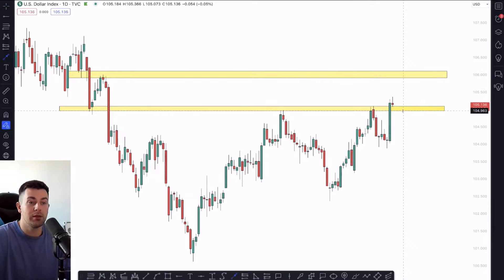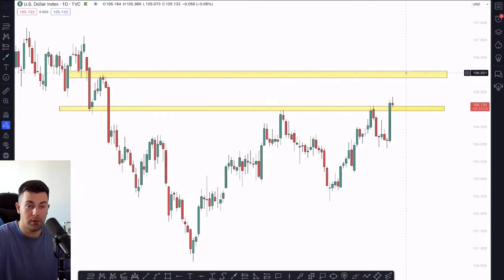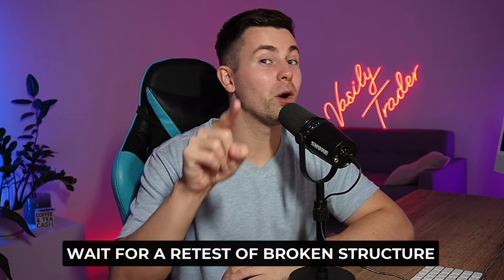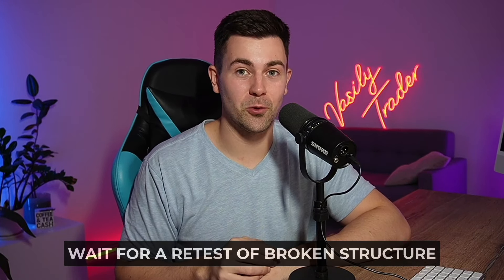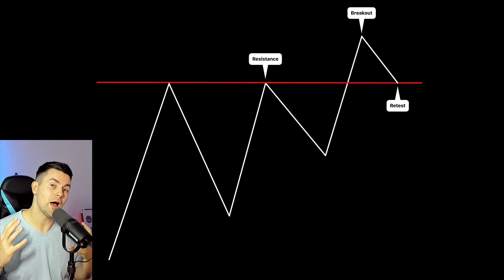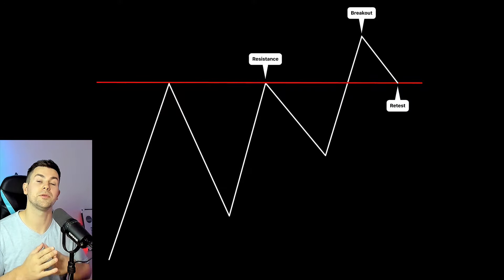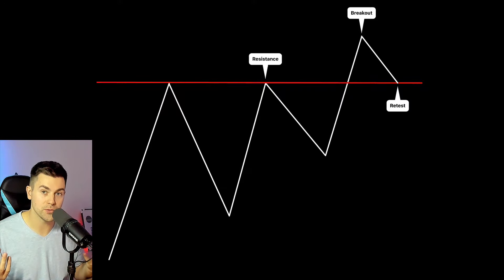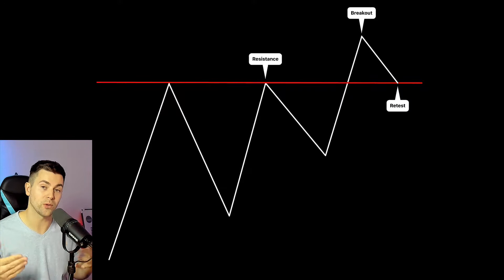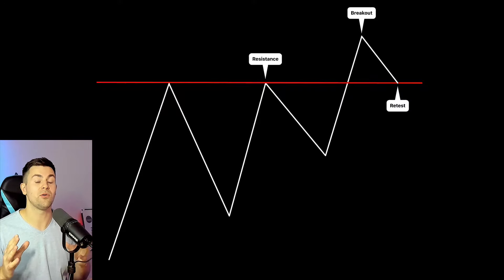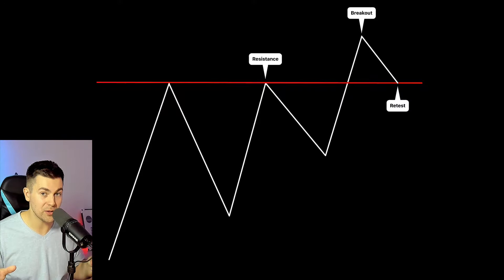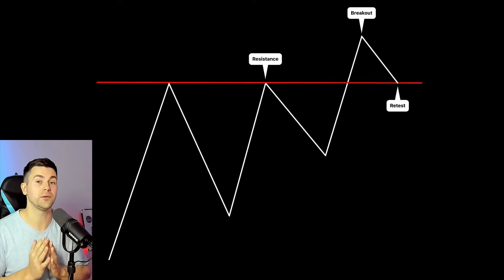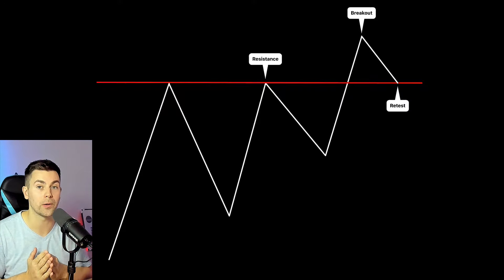Analyzing the historical structures from a daily timeframe perspective, our next resistance is going to be over here, so we have a very nice growth potential on dollar index. Step number three: wait for a retest of the broken structure. After a breakout, with high probability, the broken resistance will turn into support, and that support can provide a very safe point to buy the market from.